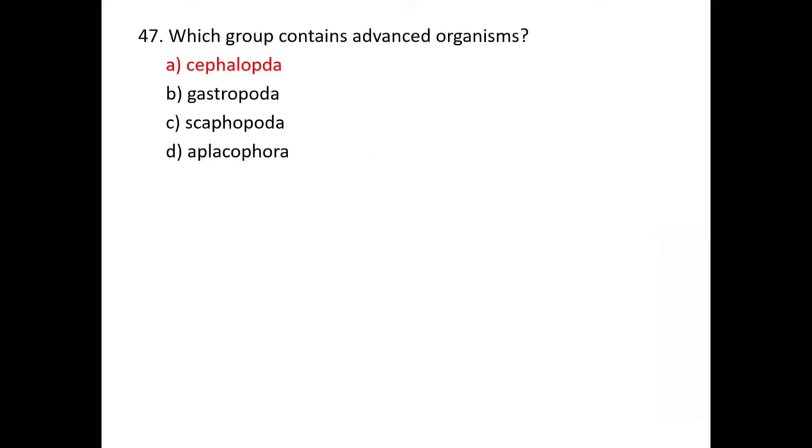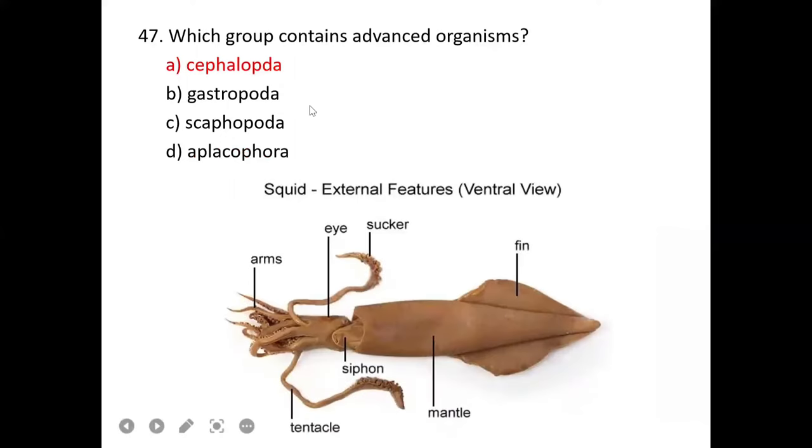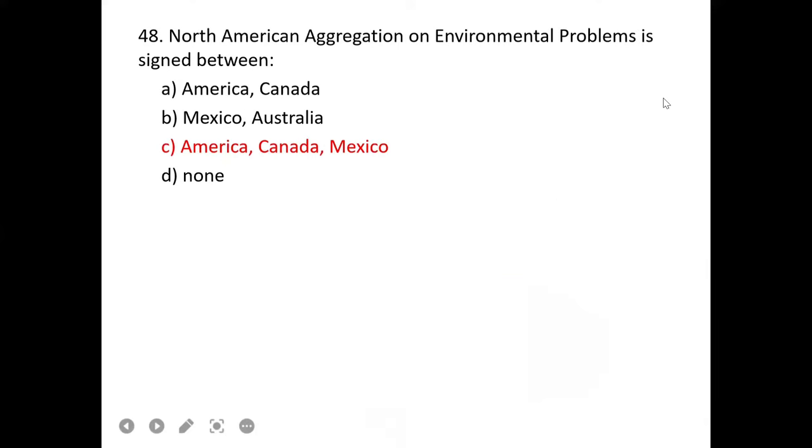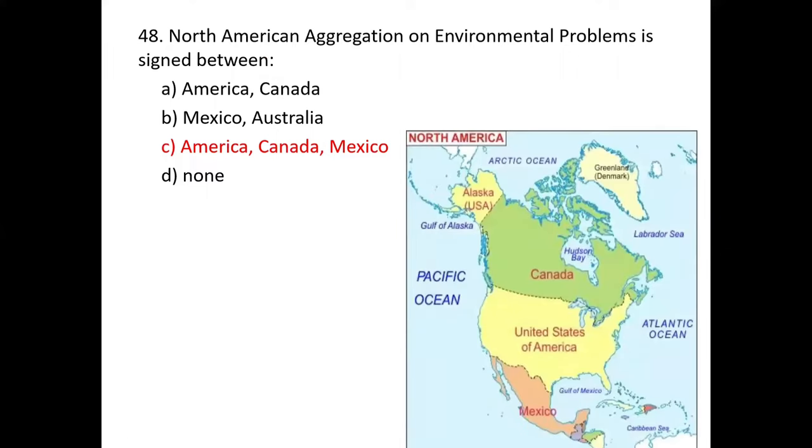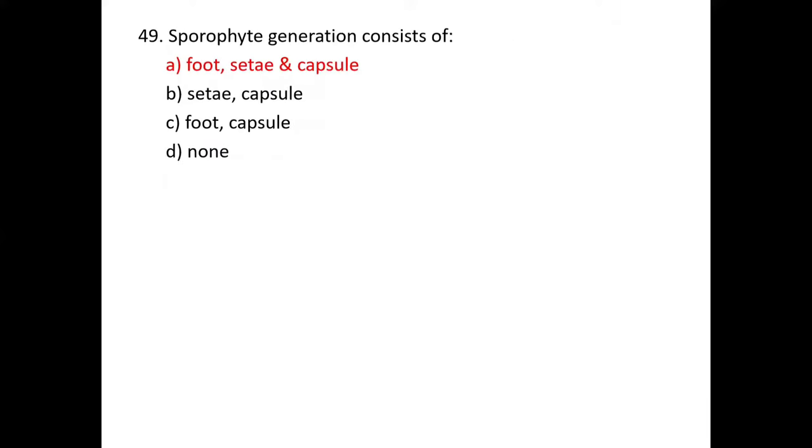How many types of gametes are present in a dihybrid cross? Four different types of gametes form. B is correct. Ascidians belong to phylum Chordata, subphylum Urochordata. They are also called sea squirts.